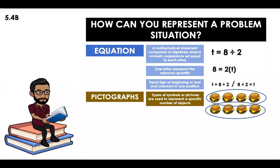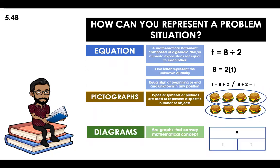Then we also have pictographs. These are types of symbols or pictures that are used to represent a specific number of objects. Whenever you have a word problem and you just draw to represent it, that's something very useful to understand and analyze the word problems. Also, we're going to be using diagrams — graphs that convey mathematical concepts. The most famous ones are the strip diagrams, which we use to represent word problems and analyze what we have to do.